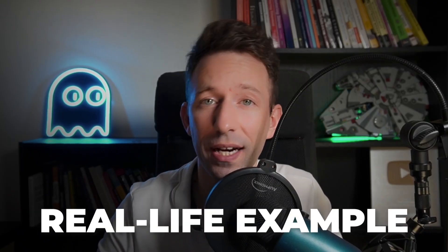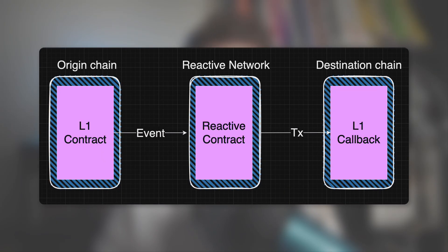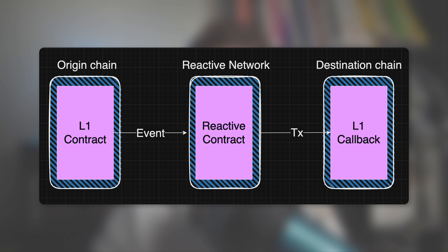Let's see a real-life example of a Reactive smart contract. First, we have the Origin Chain where a smart contract emits an event. Then we have the Reactive Network where we listen to those events and pass them to a Reactive smart contract. Finally, this Reactive smart contract triggers a transaction sent to another smart contract on the Destination Chain. In total, we have three smart contracts on three different blockchains, all written in Solidity — the most popular language for EVM-based smart contracts.